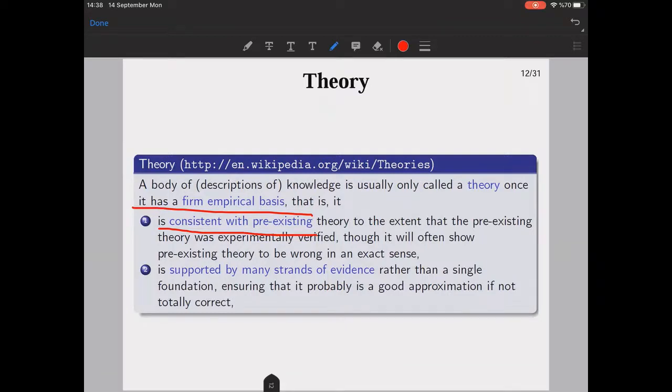Theory is a body of descriptions of knowledge usually only called a theory once it has a firm empirical basis. It should be consistent with pre-existing theories to the extent that the pre-existing theory was experimentally verified, though it will often show pre-existing theory to be wrong in an exact sense. Researchers usually work to refute existing theories by means of scientific approach. Theory is supported by many strands of evidence rather than a single foundation. It means you need to work on lots and lots of data, or many different parties should work on the same topic, ensuring that it probably is a good approximation if not totally correct.